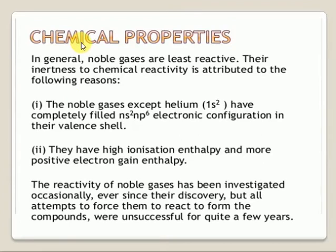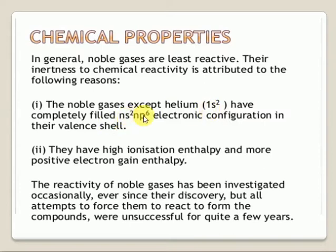Let's discuss the chemical properties of noble gases. In general, noble gases react very little — they don't take part in chemical reactions, hence called inert gases. They are inert to chemical reactivity due to the following reasons: except Helium, noble gas elements have octet electron configuration. Helium has the duplet configuration. The rest have 8 electrons in the outermost shell. Because of the completely filled valence shell, these elements don't take part in chemical reactions. Still now, we haven't found chemical compounds of Helium, Neon, and Argon.